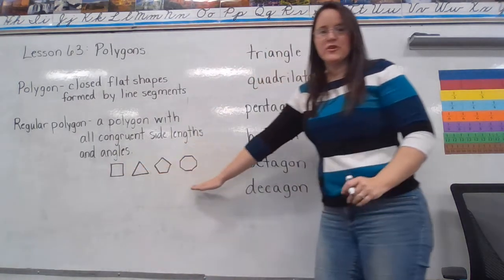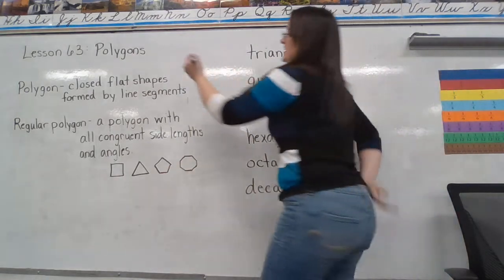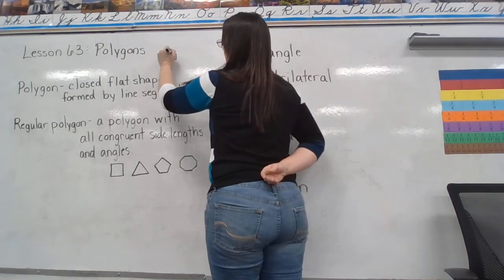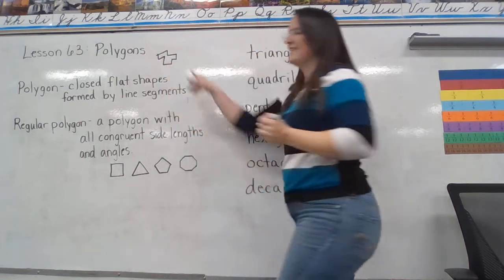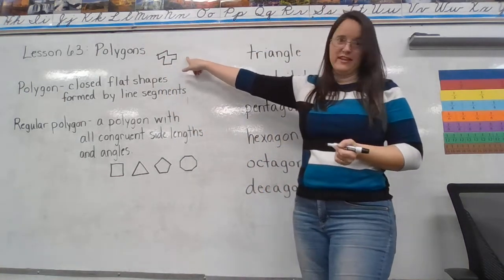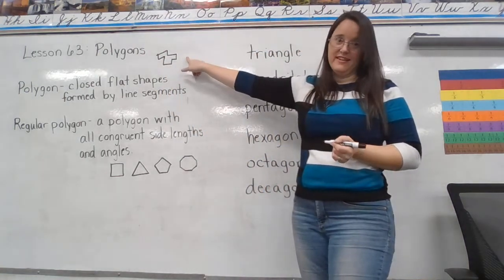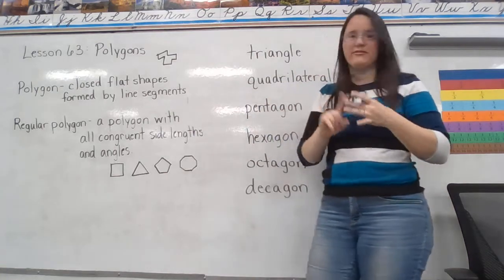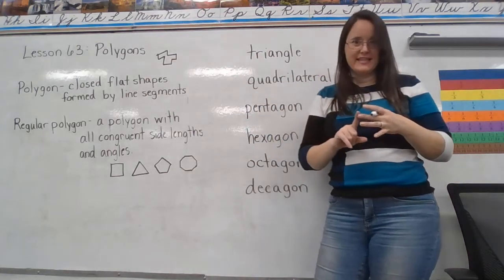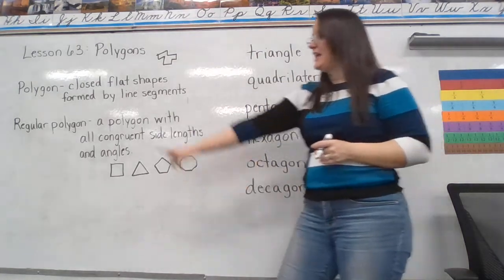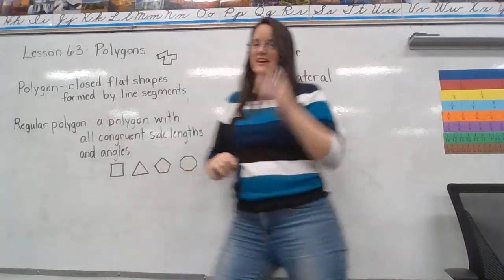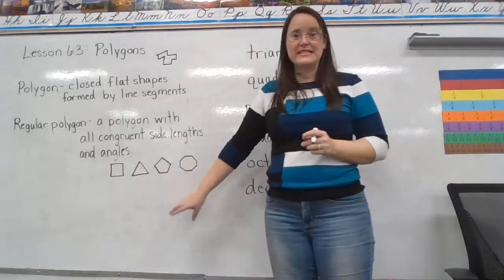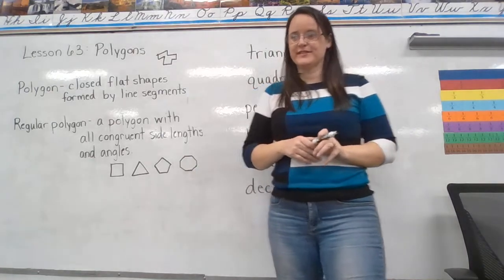These are your regular polygons. This funny-looking one I drew up here — that is not a regular polygon. It is a polygon: it's a closed, flat shape formed by line segments, but it's not a regular polygon. Regular polygons have to have congruent sides and congruent angles.